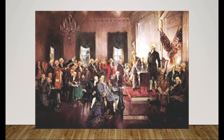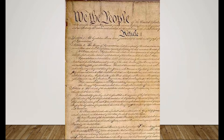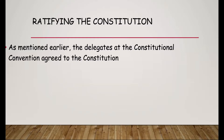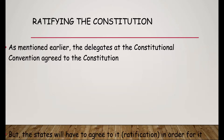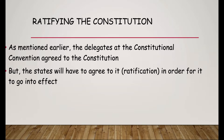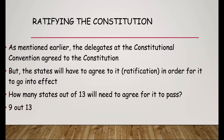We have this painting — this is how we started the unit off — the famous painting with George Washington up on the stage. It looks like maybe people are coming up to sign it. There is the actual Constitution. So they agreed to it and they signed it. However, it doesn't go into effect until the states agree on it. They made copies and sent them out to the 13 different states. Those states sit down and decide if they're going to agree to it, and they need to get nine of the 13 to agree in order for it to pass.